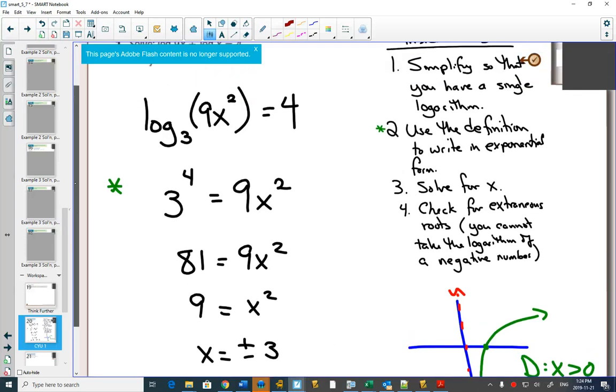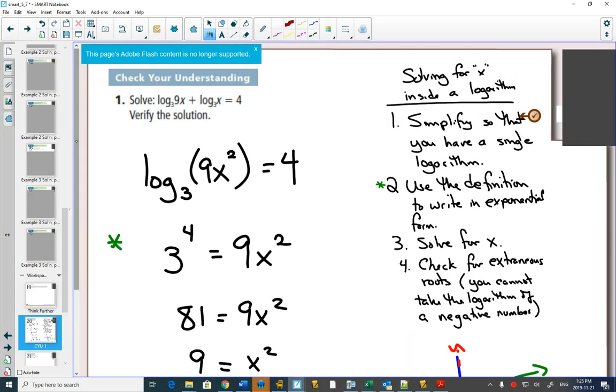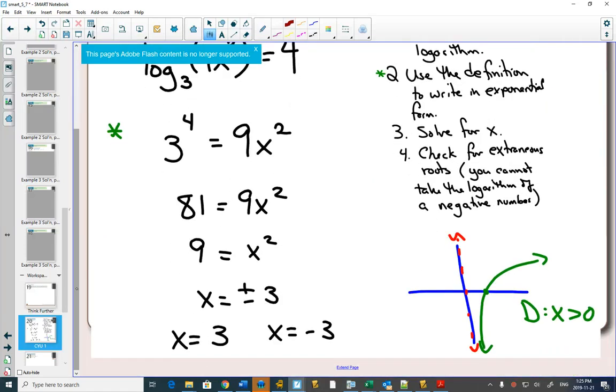So that means we have to check these answers. Go back to your original equation. If you plug 3 into the first logarithm, what's 3 times 9? 27. Is that a negative number? No. It's fine. What about the second one? Plug in the 3. It's a positive number. So all we need to do is check, if I plug in 3, do I ever put a negative number inside of a logarithm? In this case, the answer is no. This answer works.